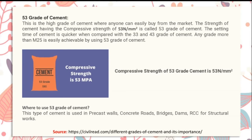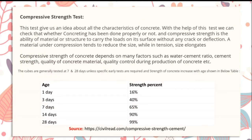Grade 53 cement: this is the highest grade of cement, with a compressive strength of 53 N/mm². The setting time is quicker compared to 33 and 43 grade cement. Grades above M25 are easily achieved using 53 grade cement. It is generally used in precast walls, concrete roads, bridges, dams, RCC structural works, and other heavy-duty construction.